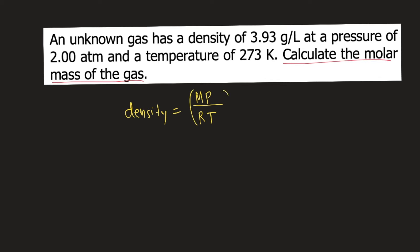First, you multiply both sides of the equation by RT. So RT on the right side will cancel. So you will have RT times density on the left side, and on the right side you have MP.